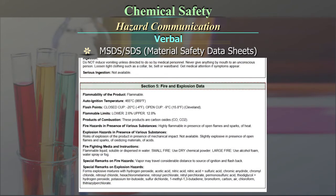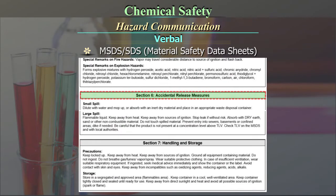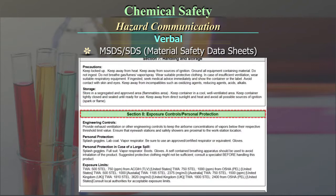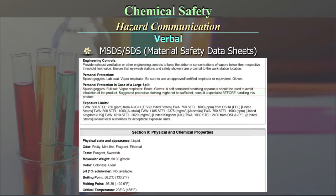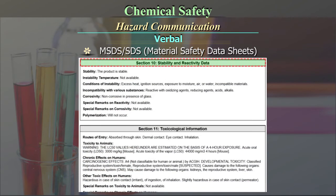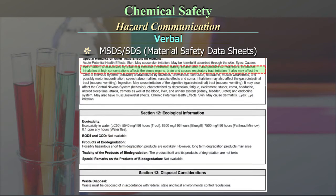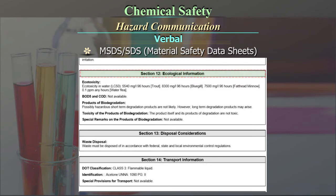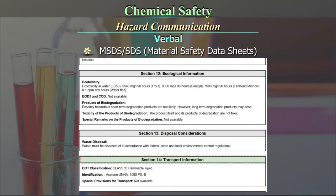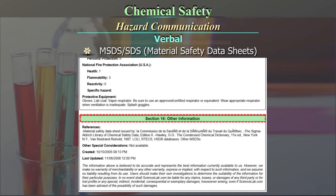Continuing the MSDS sections: (5) Firefighting measures; (6) Accidental release measures; (7) Handling and storage; (8) Exposure controls or personal protection; (9) Physical and chemical properties; (10) Stability and reactivity; (11) Toxicological information; (12) Ecological information; (13) Disposal considerations; (14) Transport information; (15) Regulatory information; (16) Other information.